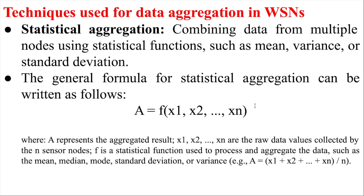There are three standard techniques in data aggregation. The first is statistical aggregation. You combine data from multiple neighbor sensor nodes using fixed mathematical functions such as mean, variance, or standard deviation. You can use the result of the mean as the final aggregated data. If there are multiple data points, you can use mean, mode, standard deviation, or average — take all the data divided by the number of nodes. Such an approach is known as the statistical approach.